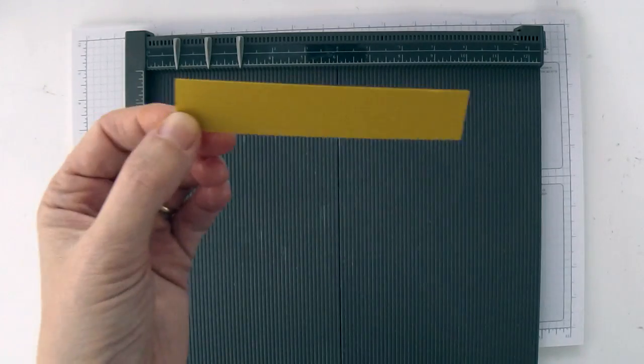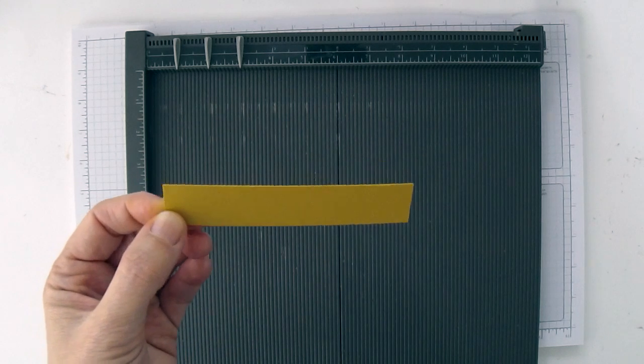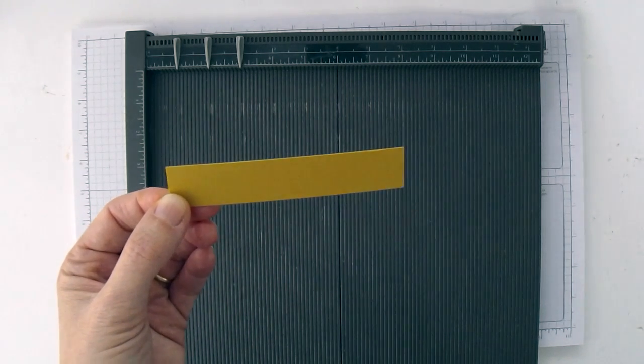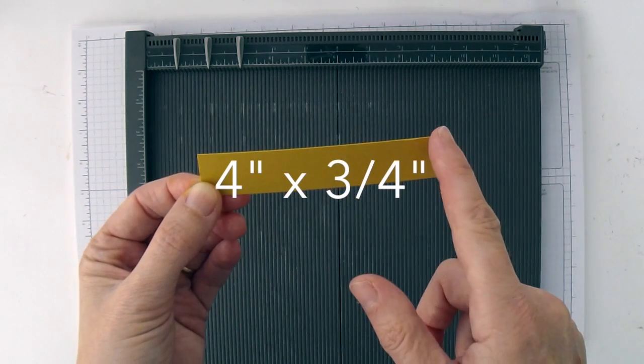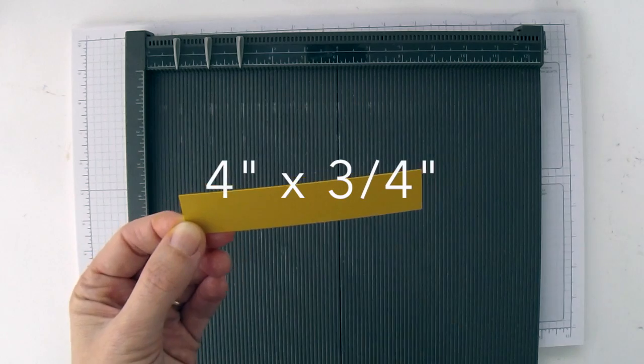To start off with, you're going to need a piece of fall colored cardstock. I'm using Delightful Dijon cardstock here. I've cut this piece to 4 inches by 3 1⁄4 inches.